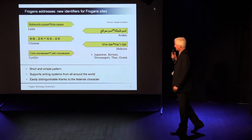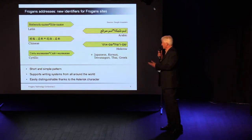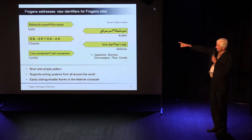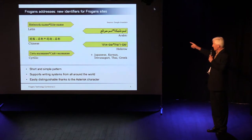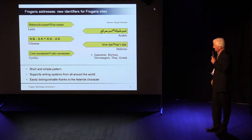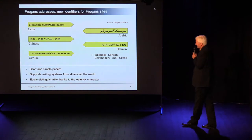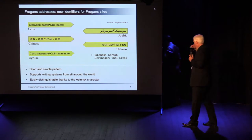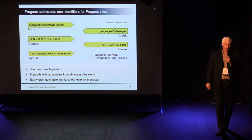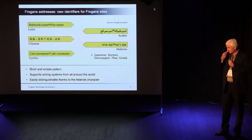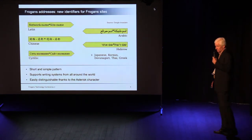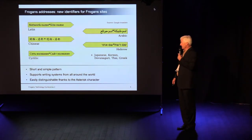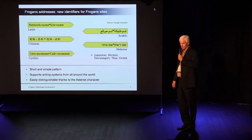The characters are in various languages. It can be written from left to right, as you see on the left side of the screen, or from right to left for Arabic and Hebrew. There are quite a few writing systems available. Because of this unusual pattern, it's a very easily identifiable system that someone can see straight away - we're talking about a Froggen's site or a Froggen's network. It won't be mixed up with an email address or a domain name.